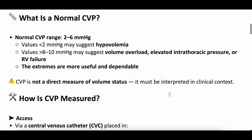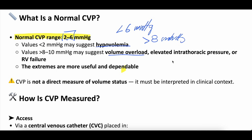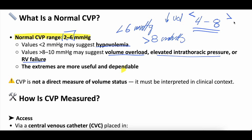When we talk about normal CVP, textbooks often quote normal around 2 to 6 millimeters of mercury. A value less than 2 does highly suggest hypovolemia, but really a value less than 6 is quite low. A value greater than 8, certainly greater than 10, is going to be considered high — that could suggest volume overload, elevated intrathoracic pressure, right ventricular dysfunction, or tricuspid regurgitation. In my brain, I think of it more like 4 to 8 as a more realistic normal range. The extremes are more useful and more dependable: a CVP less than 4 probably means volume down, a CVP greater than 14 probably means volume up.